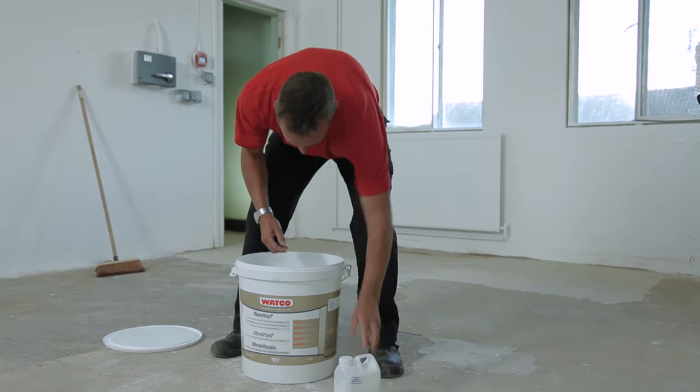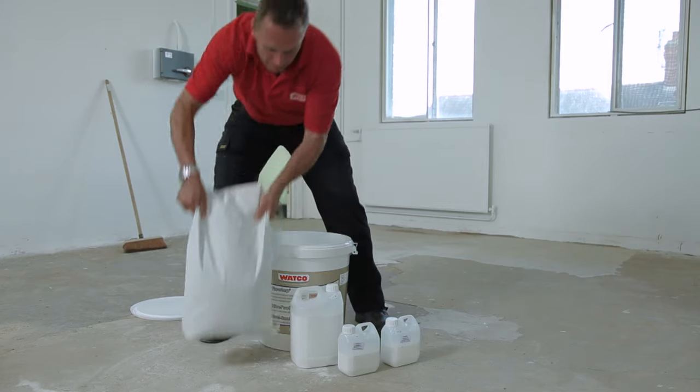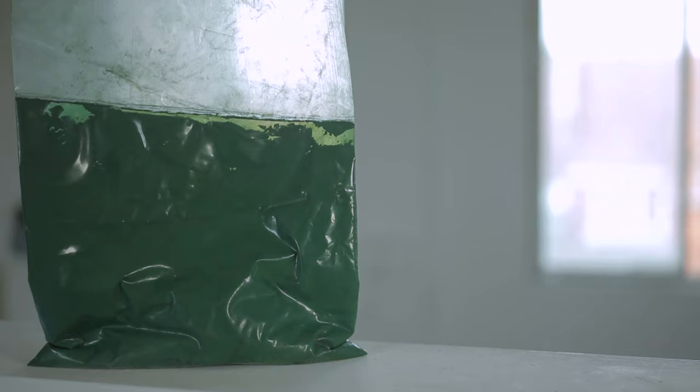The pack contains two primers, a bottle of resin and the Flowtop powder. If you're using Flowtop Coloured, there'll also be a packet of coloured pigment.